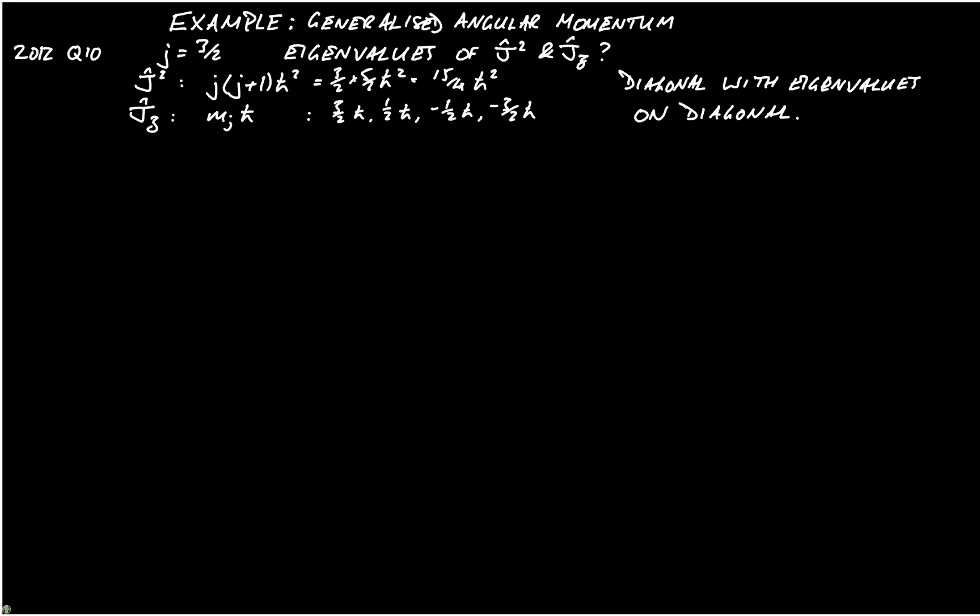You're then given the formula for the j plus and minus, the raising and lowering operators, which is equal to jx plus or minus i jy. And you're also told that j plus or minus acting on a state j mj gives you h bar times the square root of j plus 1 j minus m into m plus or minus 1 acting on the state j mj plus or minus 1.